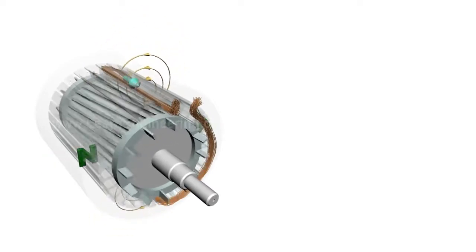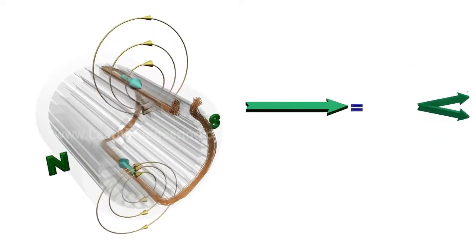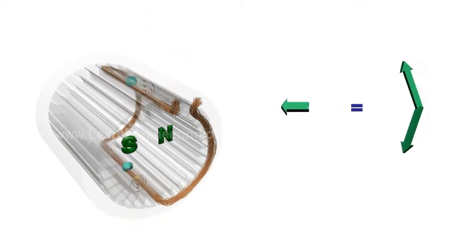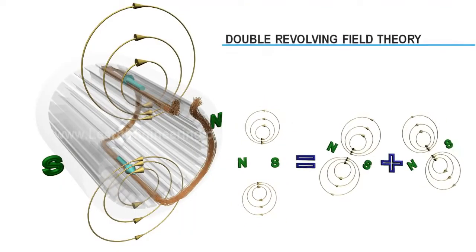The reason is as follows: the fluctuating field is equivalent to the sum of two oppositely rotating magnetic fields. This concept is known as double revolving field theory.